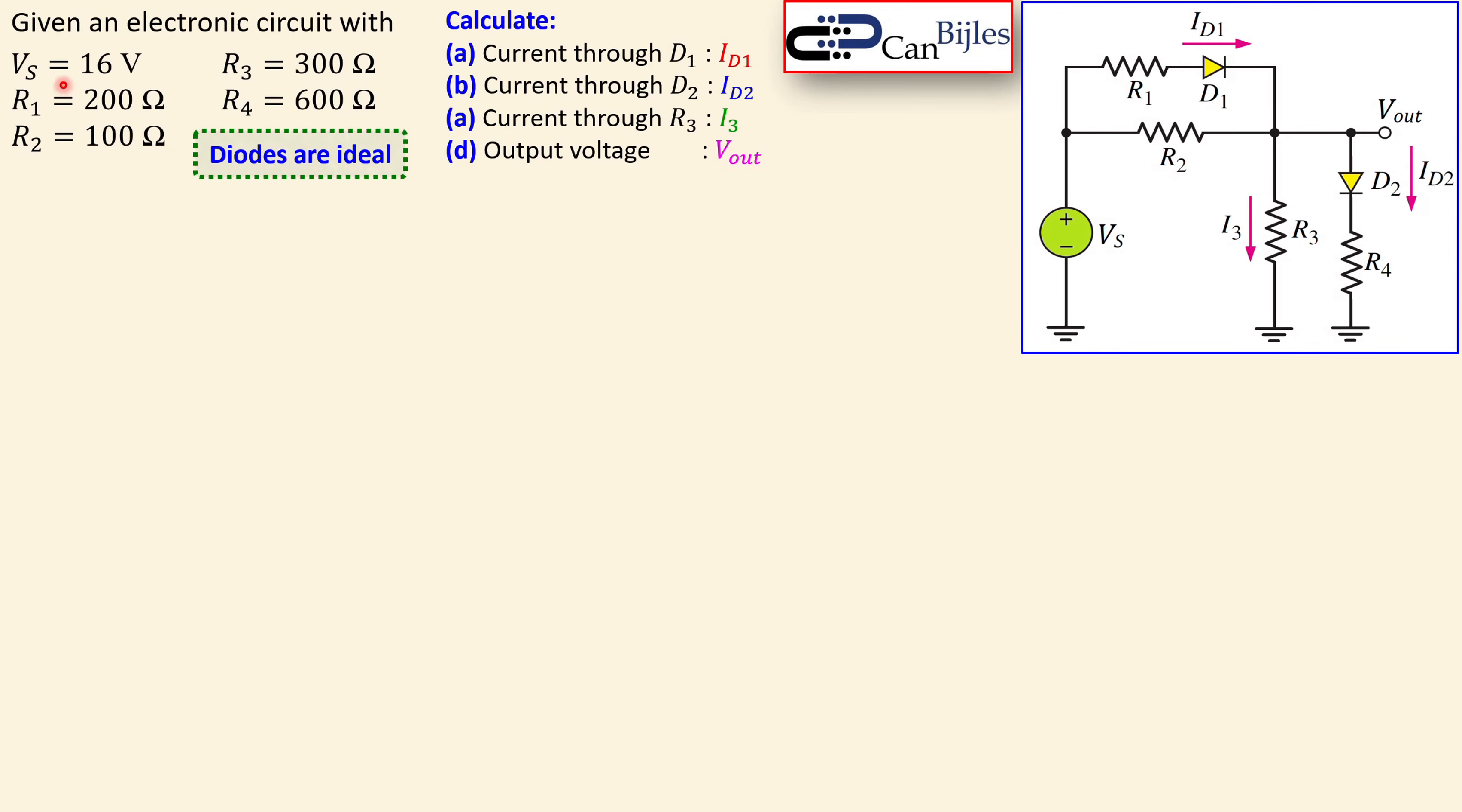We have the following circuit with Vs, a DC voltage source of 16 volts. We have R1, R2, R3 and R4, four resistors, and we have two diodes.